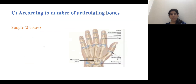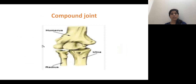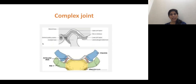According to the number of articulating bones: a simple joint involves two bones articulating to form the joint; a compound joint involves more than two articulating bones or surfaces; and a complex joint has more complex articulating surfaces with more articulating surfaces present.